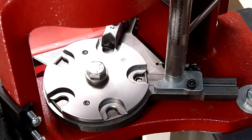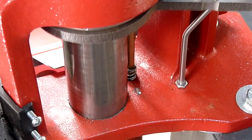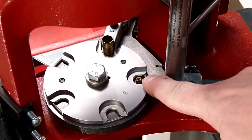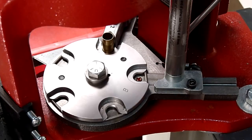To confirm that the priming system is working properly, now that we've filled the priming tube, we're just going to cycle the press once and then confirm that we have our primer. It looks like that slide is working perfectly. The priming system is ready.